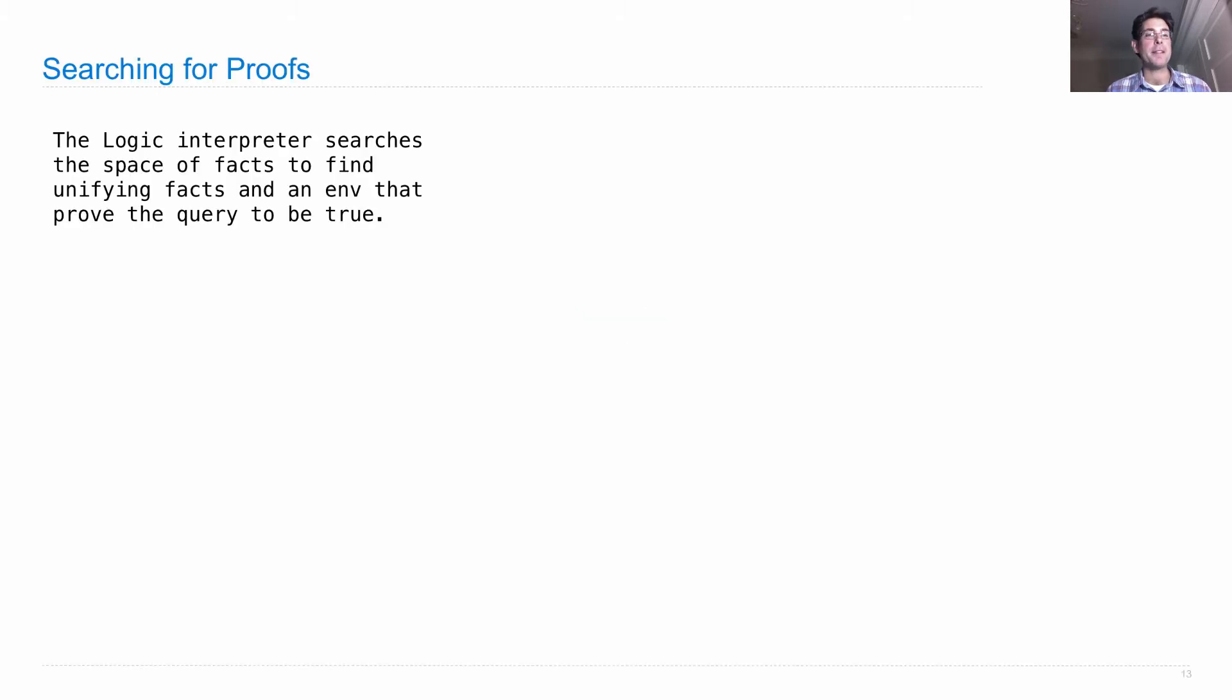The second fundamental operation in the logic interpreter is search. Searching for proofs goes like this: the logic interpreter searches the space of all facts to find unifying facts in an environment that prove the query to be true.